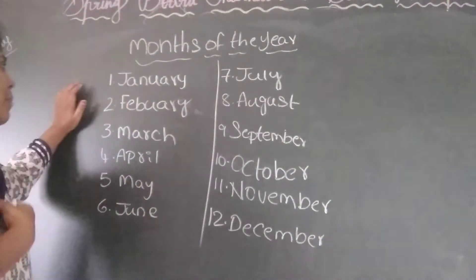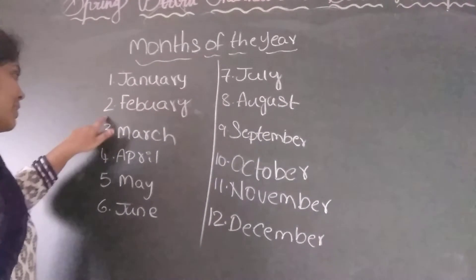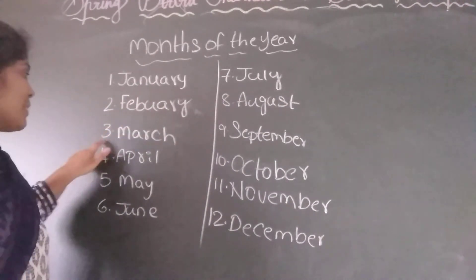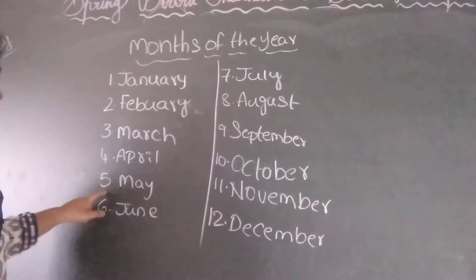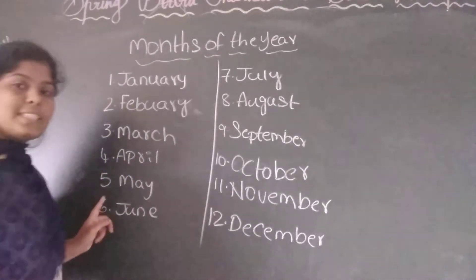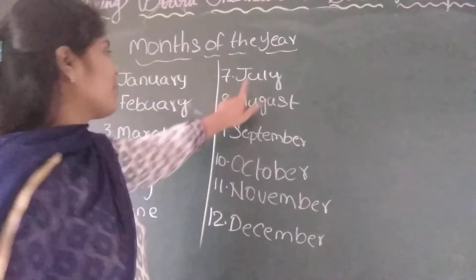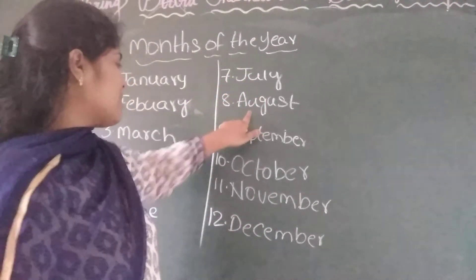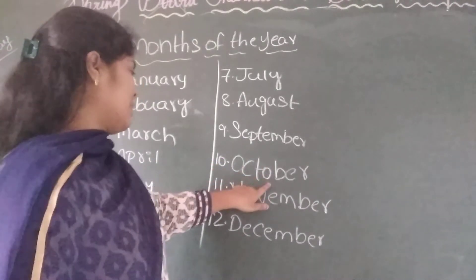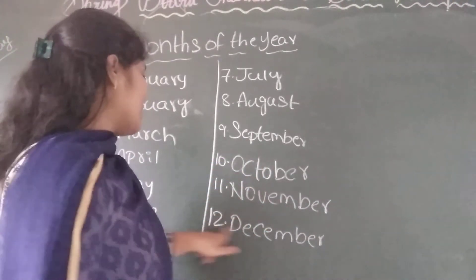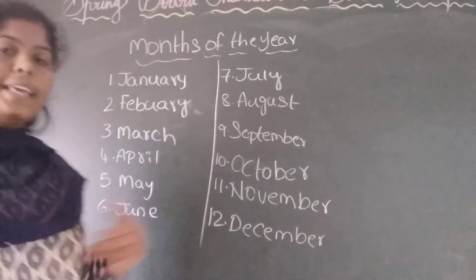So these are the months of the year. The first month is January, second month is February, third month is March, fourth month is April, fifth month is May, sixth month is June, seventh month is July, eighth month is August, ninth month is September, tenth month is October, eleventh month is November, and twelfth month is December. So these are the months of the year.